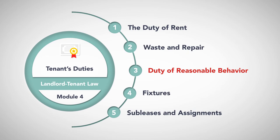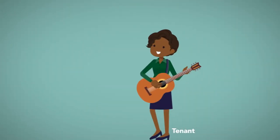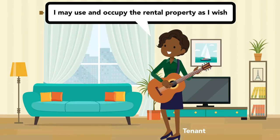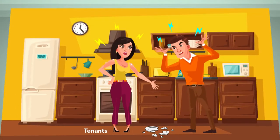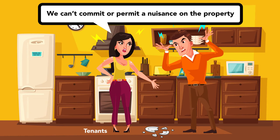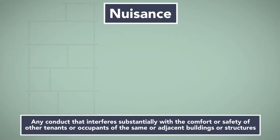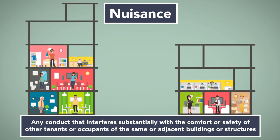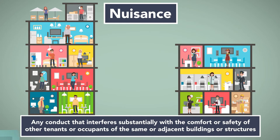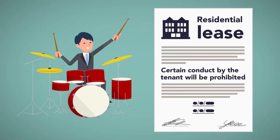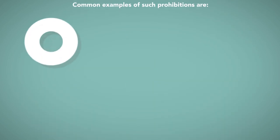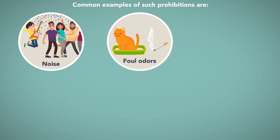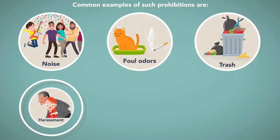Duty of Reasonable Behavior. Tenants generally may use and occupy rental property as they wish. However, certain forms of behavior are prohibited for a tenant even within the confines of the lease premises and are considered breaches of the lease agreement. Tenants may not commit or permit a nuisance on the property. A nuisance is any conduct that interferes substantially with the comfort or safety of other tenants or occupants of the same or adjacent buildings or structures. Most residential leases specify that certain conduct by the tenant will be prohibited over the course of the tenancy. Common examples of such prohibitions are excessive noise due to music or partying, foul odors due to pets or smoking, excessive waste or trash, and the harassment of others.